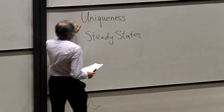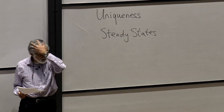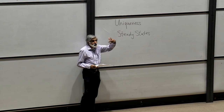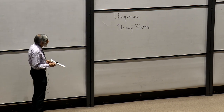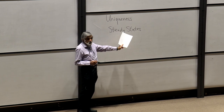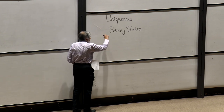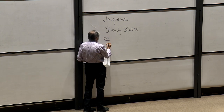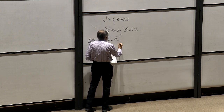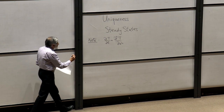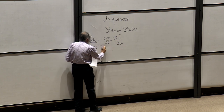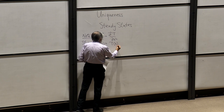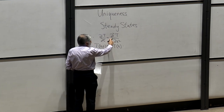Yesterday we talked about uniqueness and proved that the solution to the heat equation, or diffusion equation, is unique. So the solution we were finding by using the Fourier series was the solution. We also talked about steady states of the system. A note about steady states: we have dT/dt equals d²T/dx², and at steady state T is just a function of x, meaning the time derivative is zero and this becomes an ordinary differential equation.